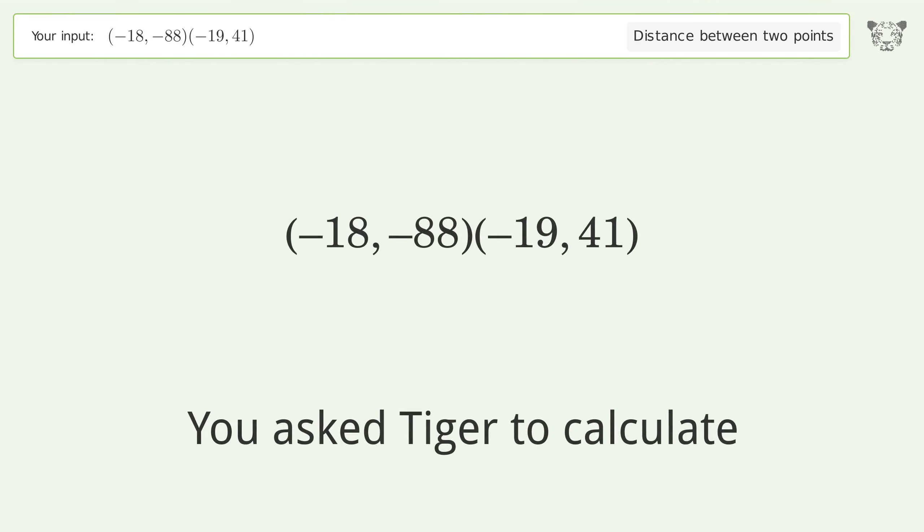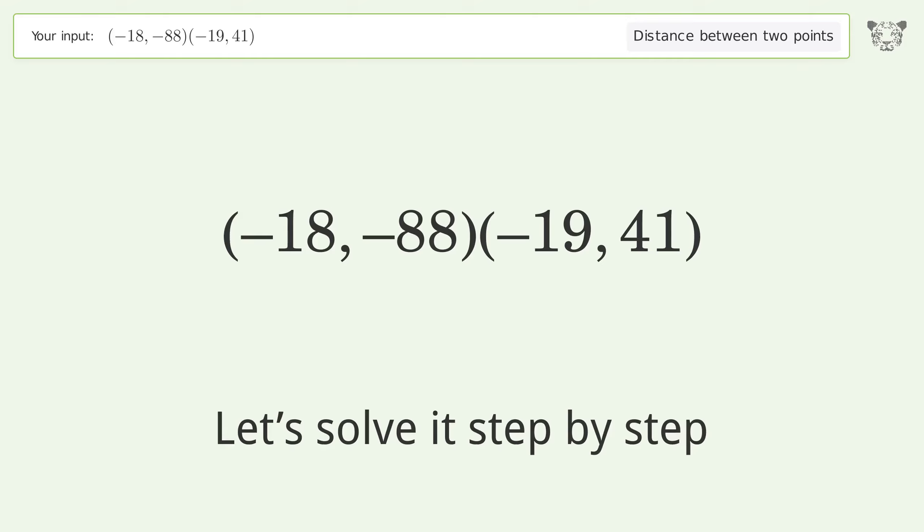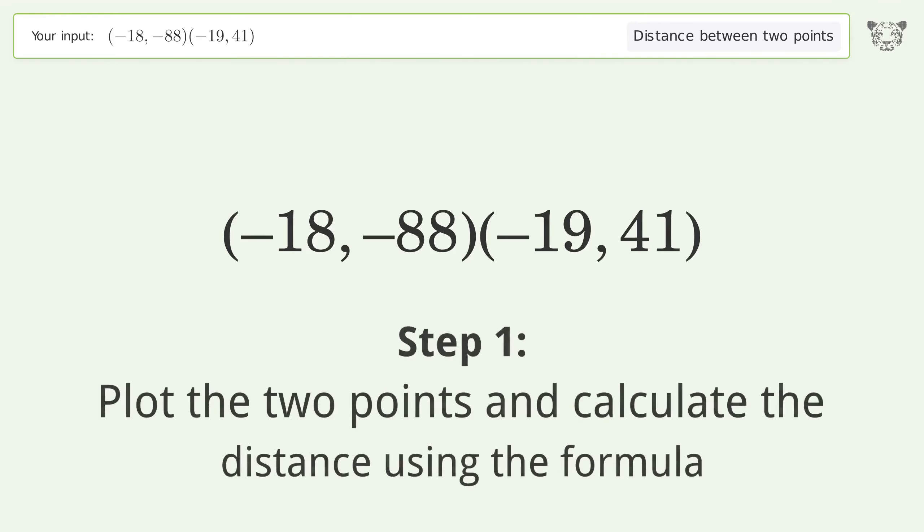You asked Tiger to calculate the distance between two points. The distance between the two points is the square root of 16,642, or 129.004. Let's solve it step by step. Plot the two points and calculate the distance using the formula.